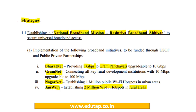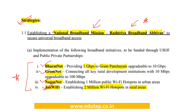Under strategies, a National Broadband Mission known as Rashtriya Broadband Abhiyan will be established. Further initiatives under this include BharatNet, GramNet, NagarNet, and JanWiFi — kindly memorize these four names. Under JanWiFi specifically, they intend to establish 2 million Wi-Fi hotspots in rural areas. Have a rough look at the numbers under each initiative.